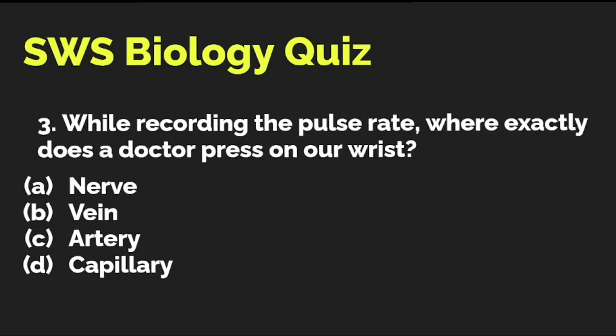While recording the pulse rate, where exactly does a doctor press on our wrist? Is it A) a nerve, B) a vein, C) an artery, or D) capillaries? The correct answer is C — artery.